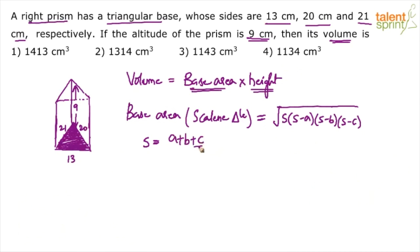a plus b plus c by 2. Don't write all these formulas in the exam. Just start substituting the values. So 13 plus 20 plus 21 upon 2. How much is the semi-perimeter? So this is like 20 plus 13 is 33. 33 plus 21 is 54. 54 by 2 is 27.